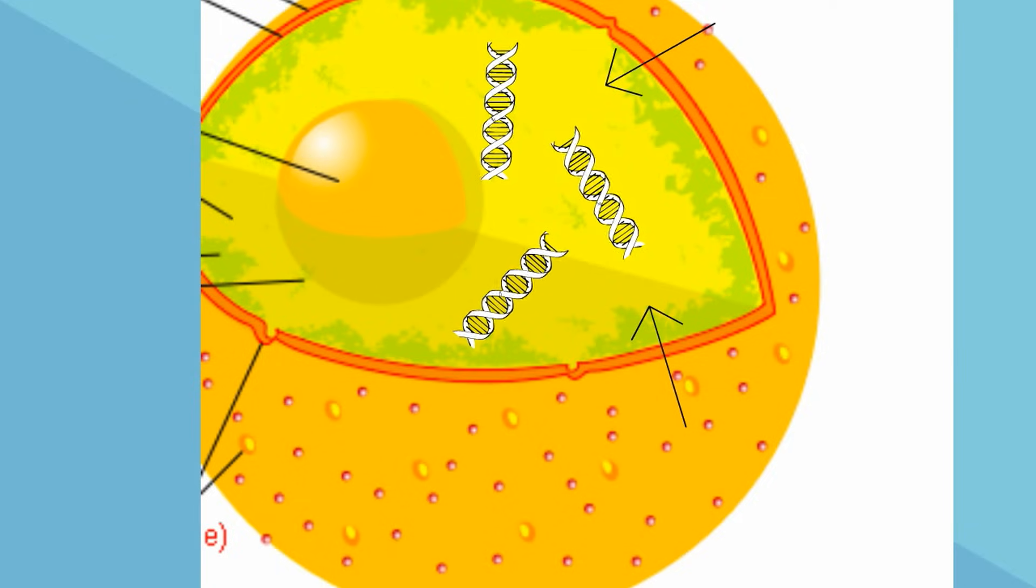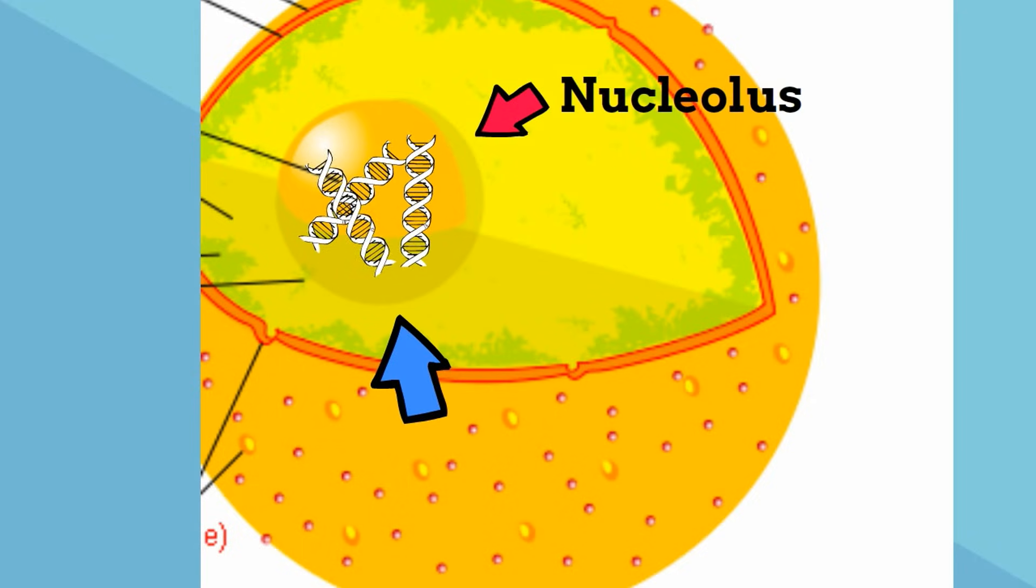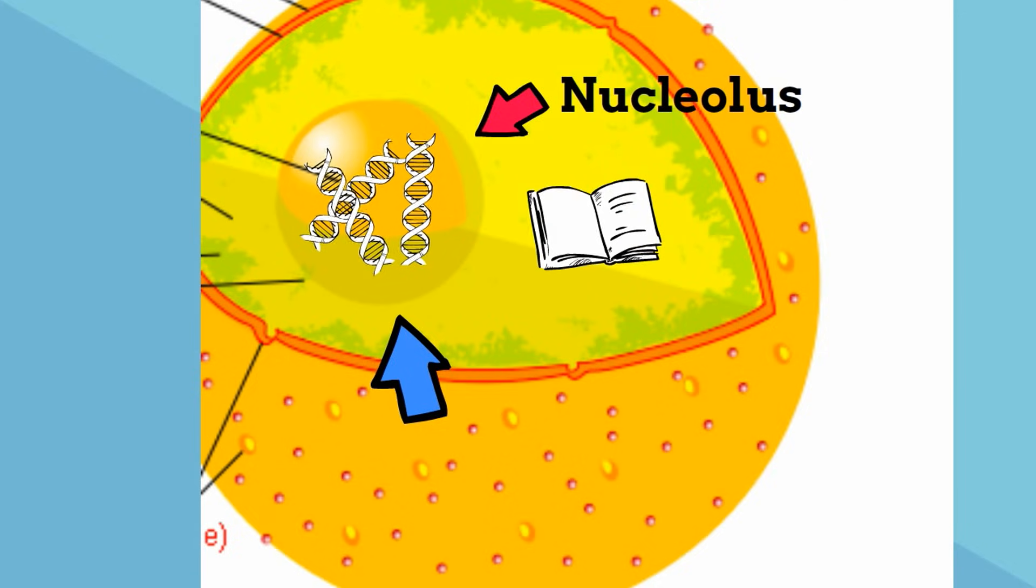The nucleolus is almost like a nucleus inside the nucleus. It has a very high concentration of DNA. It is also the site of transcription, which is the starting point of protein synthesis. This is how the nucleus controls the cell.